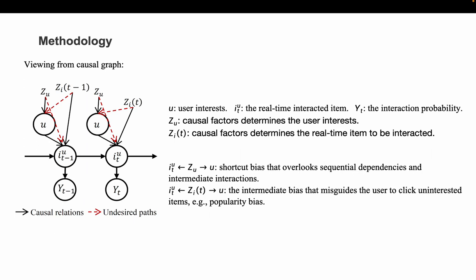Similarly, the biased path starts from the real-time causal factors Z_I, which indicates intermediate bias that may misguide the user to click uninterested items, such as popularity bias.